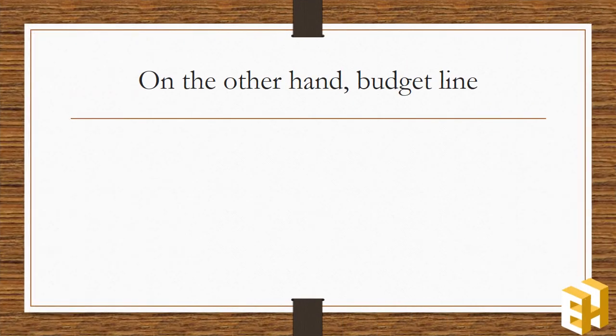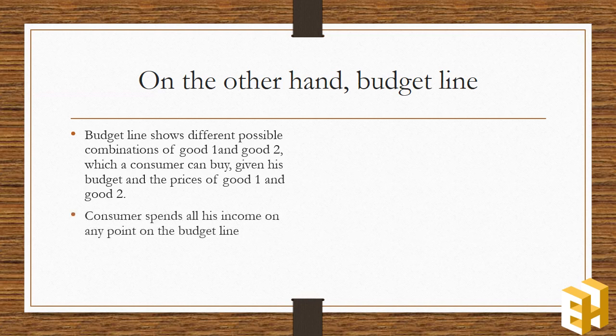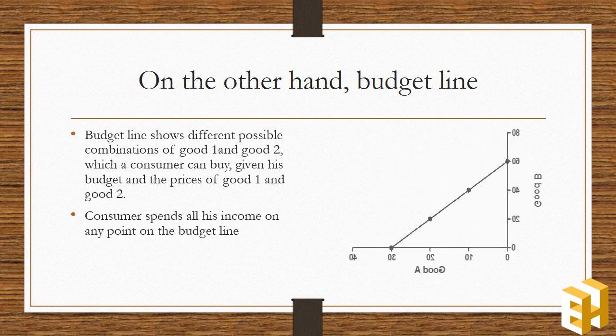To determine consumer's equilibrium, we also need a budget line. It shows different possible combinations of two goods which a consumer can buy with a given income and prices of the two goods. At any point on the budget line, consumer spends all his income. Points above the budget line show unaffordable combinations.